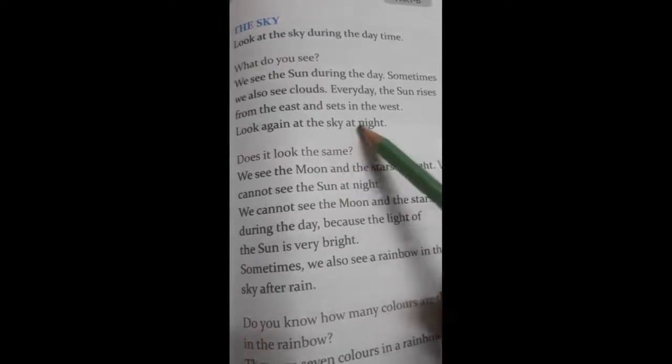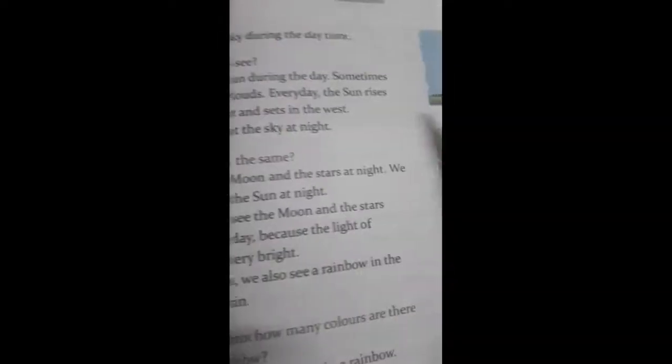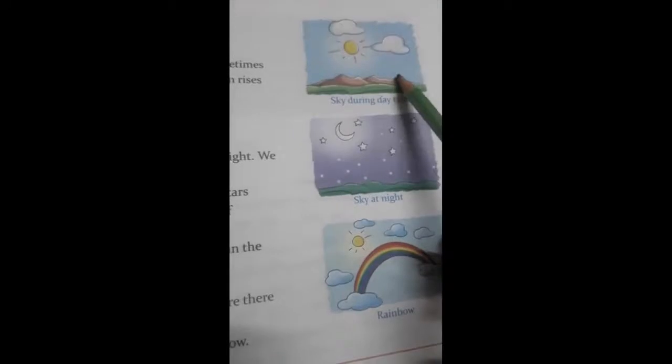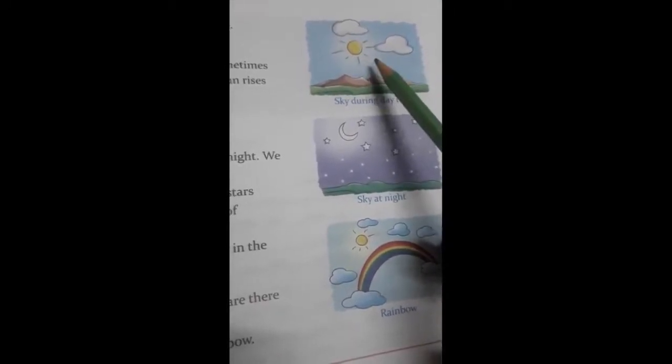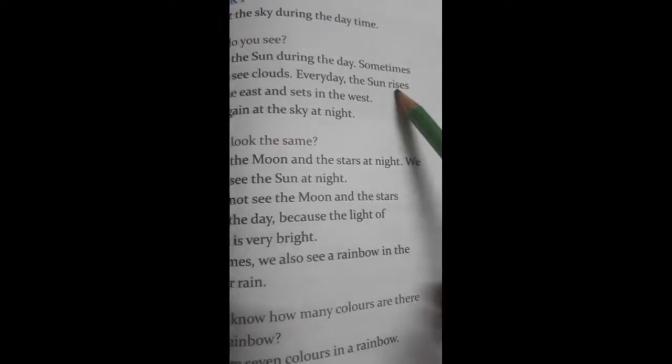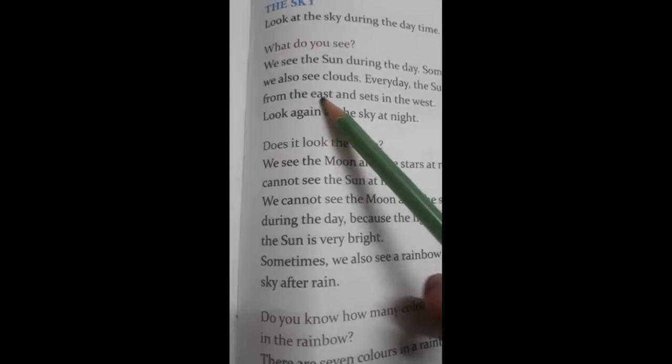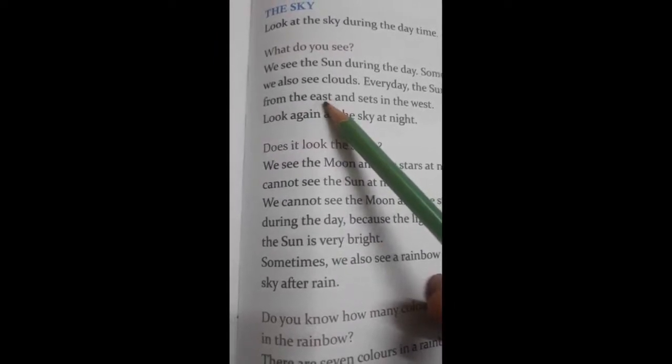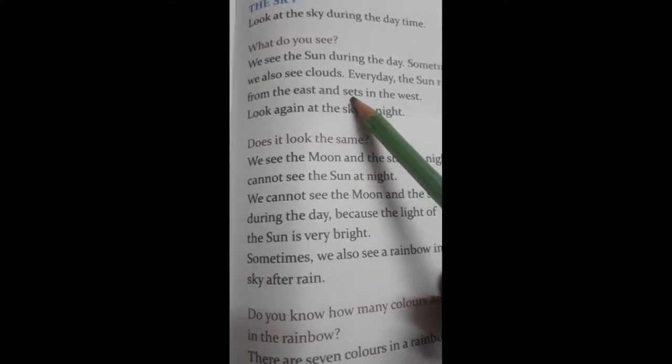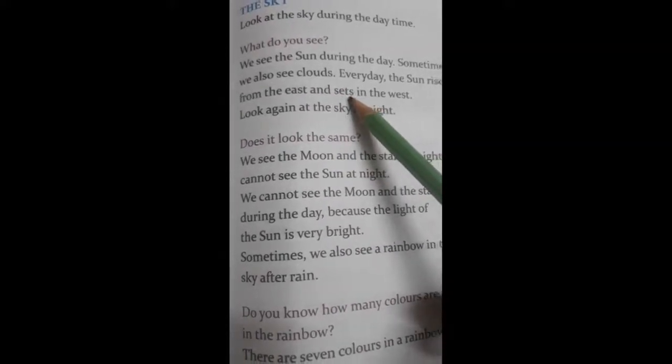Look again at the sky at night. So children, now you can see in this picture, this is day time, so sky during the day time like this. Sun shining brightly. And you know children, the sun rises, rises means ugna, nikalna, from the east. East means in Hindi, poor. And set means dubna in the west.